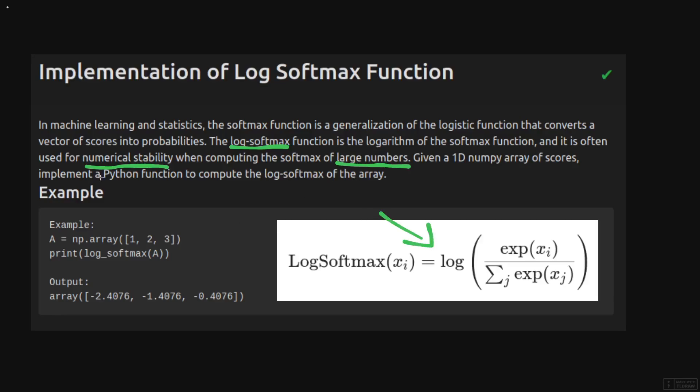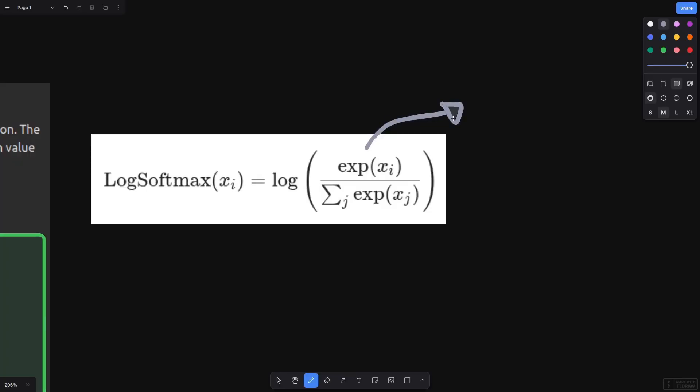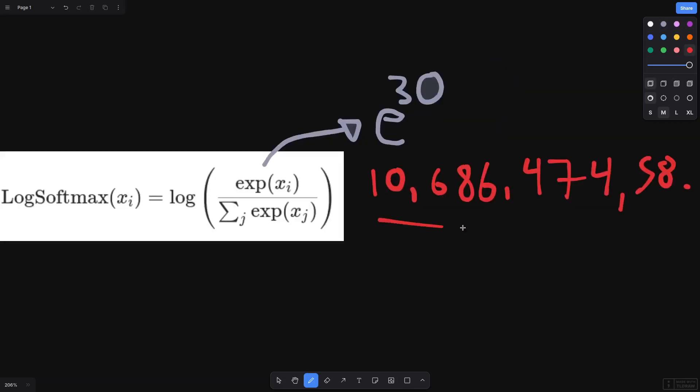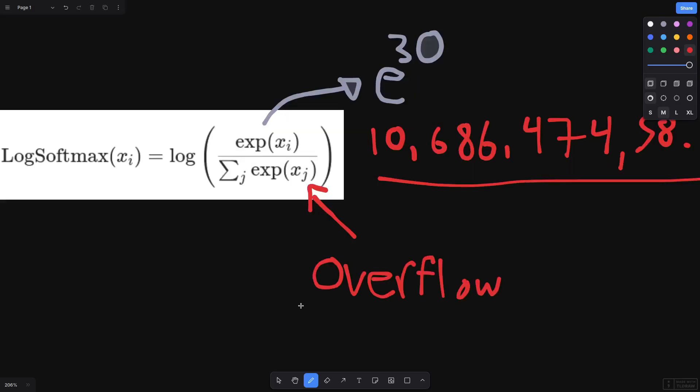First we need to understand why there's a numerical instability when there's large numbers. Let's dig a bit more into that formula. What happens if e is to the 30? We get a massive number here, and we're going to get massive numbers over there also. The issue we have with this implementation is that we're going to get overflow, and this is problematic because we're dealing with computers which have finite memory allocation for variables.